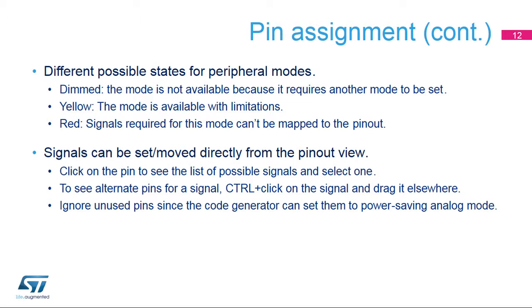Red: signals required for this mode cannot be mapped to the pinout. This may occur if a crucial signal has all its alternate pins used by other peripherals. Signals can be set or moved directly from the pinout view. Click on the pin to display the list of possible signals and select one. To see alternate pins for a signal, hold the control key and click on the signal. You can then drag and drop the signal to the new pin while holding the control key.